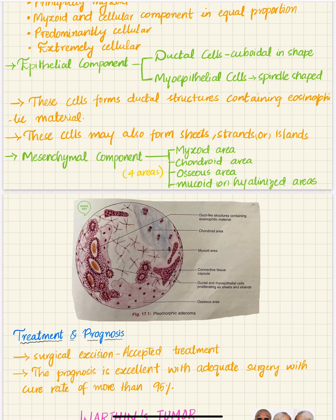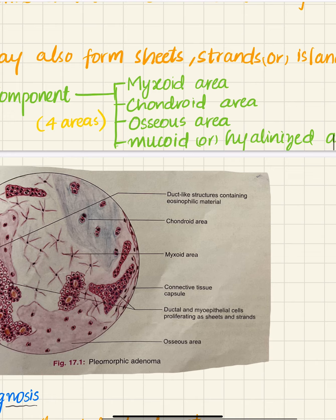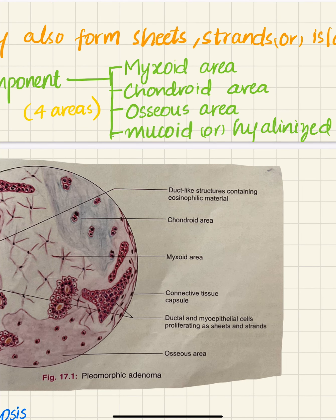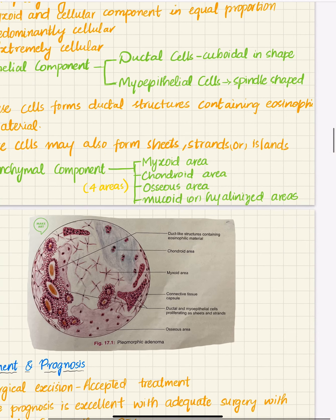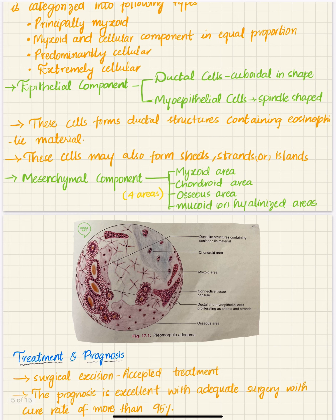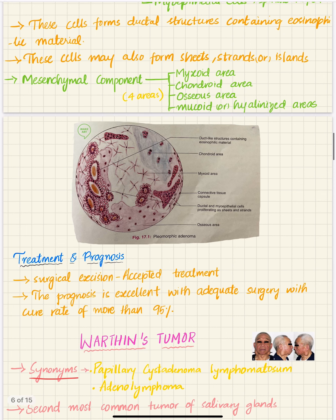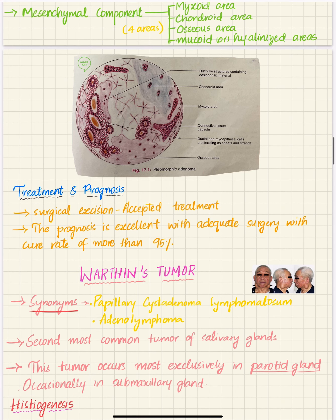The mesenchymal component has four areas: myxoid area, chondroid area, osseous area, and mucoid or hyalinized area. So in summary, the epithelial component consists of ductal cells and myoepithelial cells, and the mesenchymal component consists of four types of areas: myxoid, chondroid, osseous, and mucoid or hyalinized.